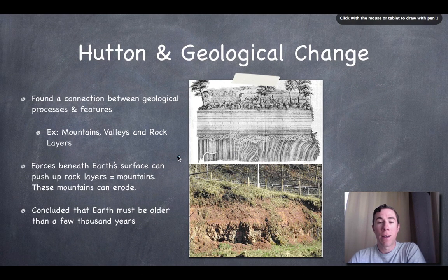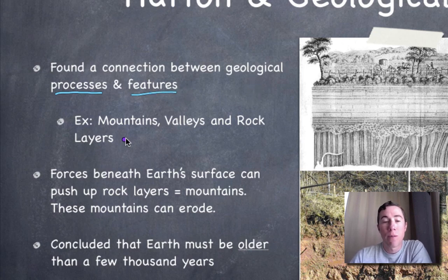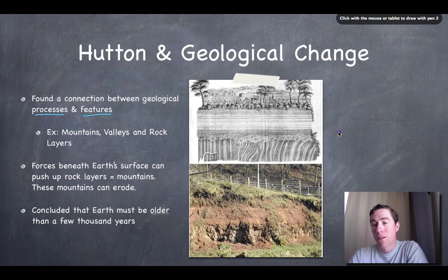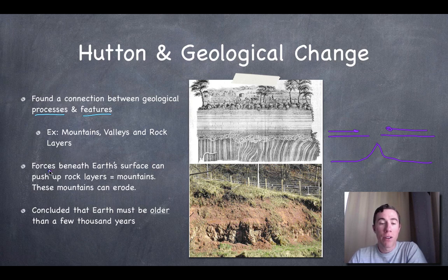Taking a closer look at Hutton and geological change — Hutton found a connection between geological processes and geological features. An example of this would be how mountains formed. If you took Earth Science, you may remember convergent plate boundaries, when two plates on Earth's surface are moving towards one another. If these two plates move towards one another, they can converge and actually ripple up and form a mountain range. Hutton noted that forces between Earth's surface can push up on these rock layers, as in the example of the mountain.